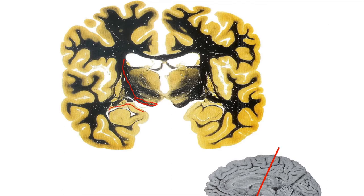The hippocampus is now more clearly visible on either side — named because it looks like a seahorse. The thalamus continues to grow larger. Most other structures remain: corpus callosum, fornices, and ventricles. Now between the thalami we can see the third ventricle, into which CSF drains from the lateral ventricles through the interventricular foramen.